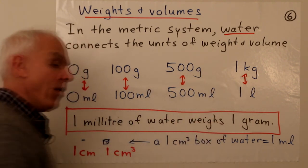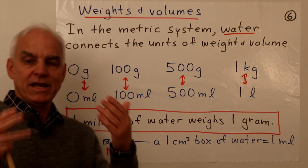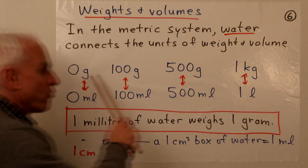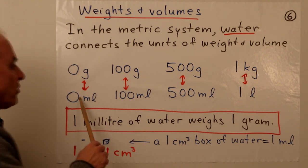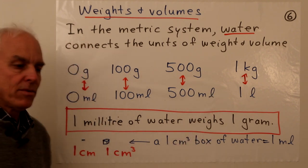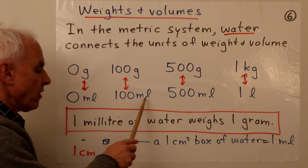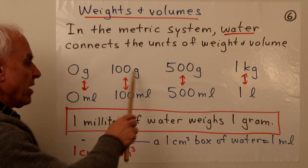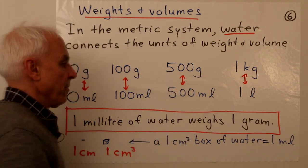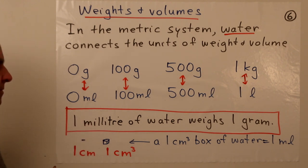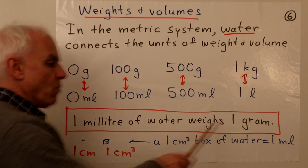Since the kilogram is divided into a thousand grams and the liter is also divided into a thousand milliliters, there is a precise correspondence: the number of grams that a certain amount of water weighs equals the number of milliliters of its capacity. So 100 milliliters of water weighs 100 grams, 500 milliliters weighs 500 grams, and one milliliter of water weighs one gram.